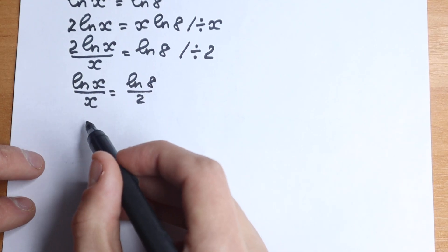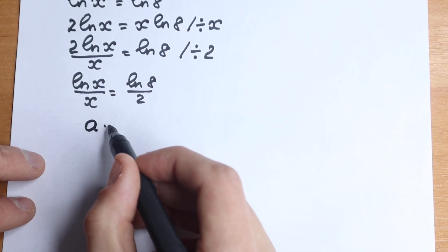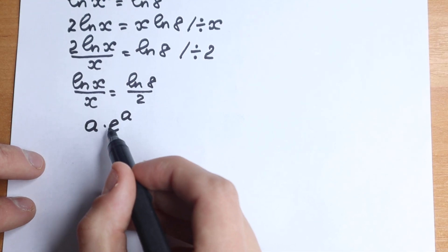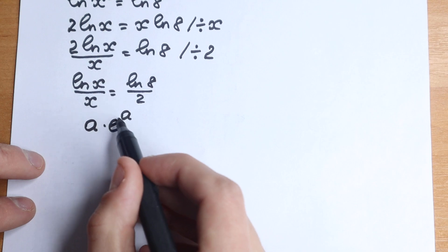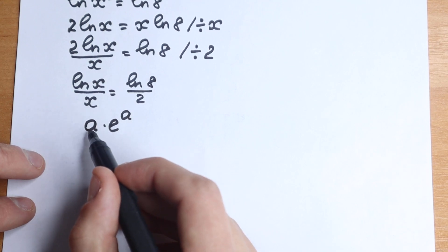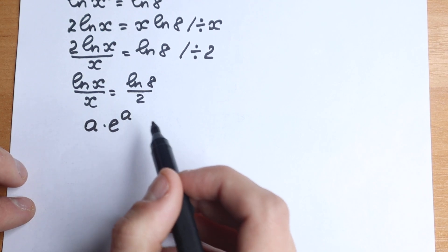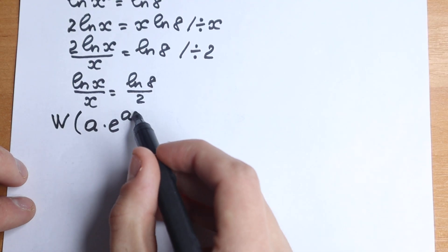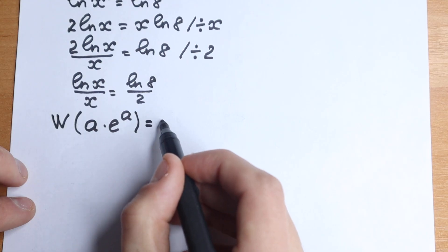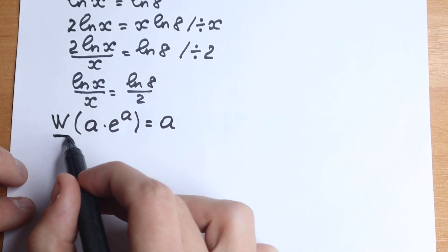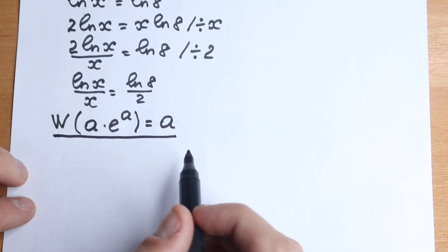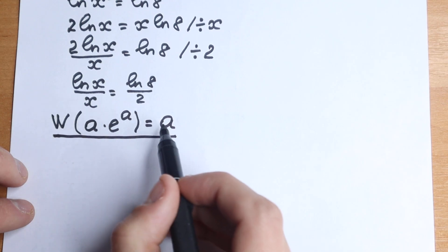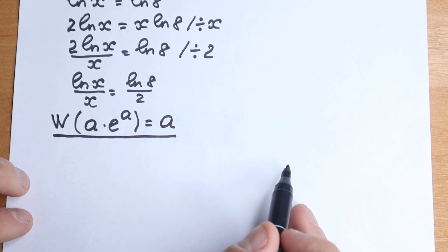A lot of students find the Lambert W function difficult. Here's how to understand it: imagine you have an expression like a times e to the power a. We have e, and the same expression a both in the exponent and as a factor. If we apply the Lambert W function to this, the result is simply a. That's the key rule.